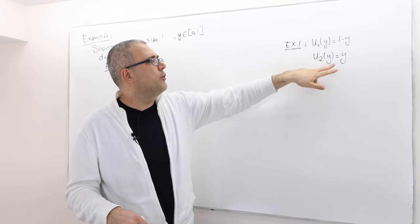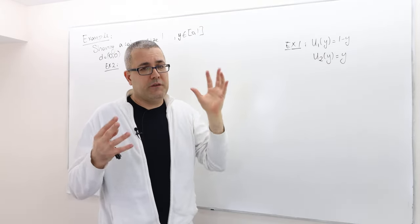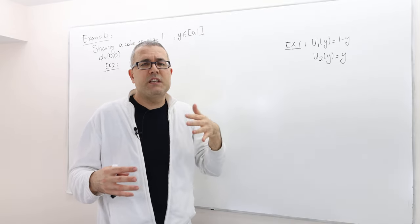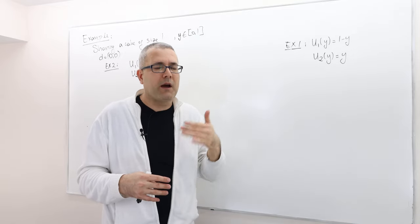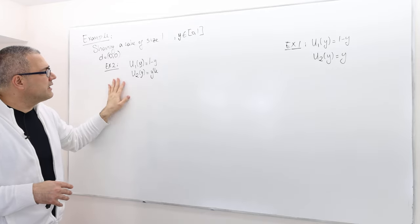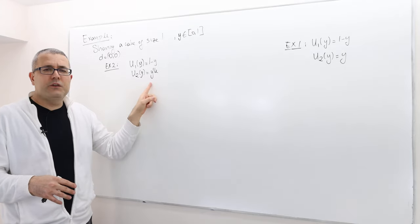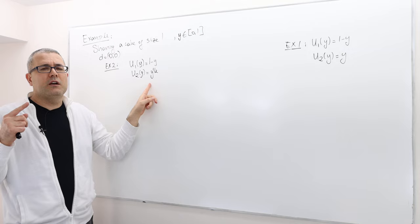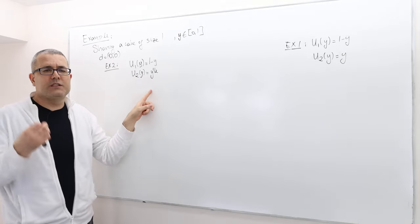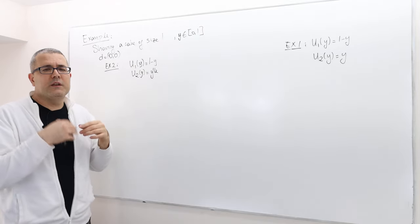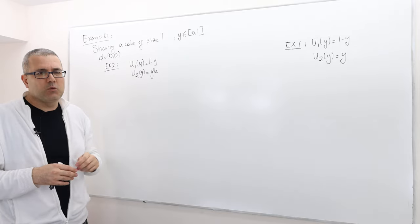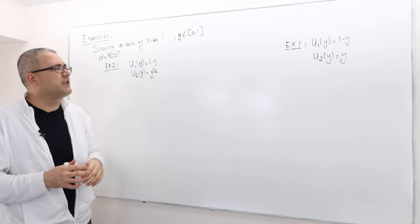Player two receives share Y, so his utility is Y. Player one receives the remaining surplus, which is 1 minus Y, and his utility is also 1 minus Y. In the second example, however, player two or negotiator two is risk averse. If he receives surplus Y, his utility is square root of Y. His opponent receives surplus 1 minus Y and his utility is still 1 minus Y — he's still risk neutral.